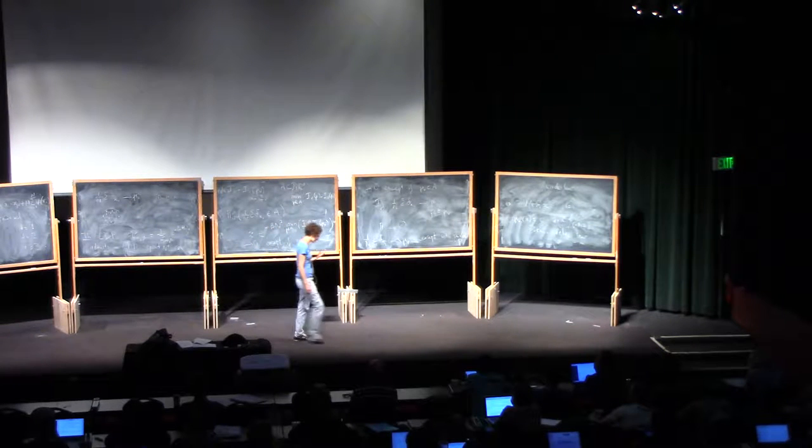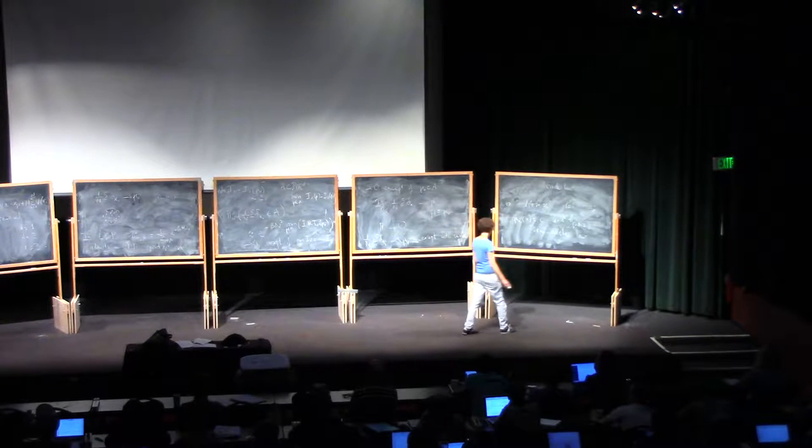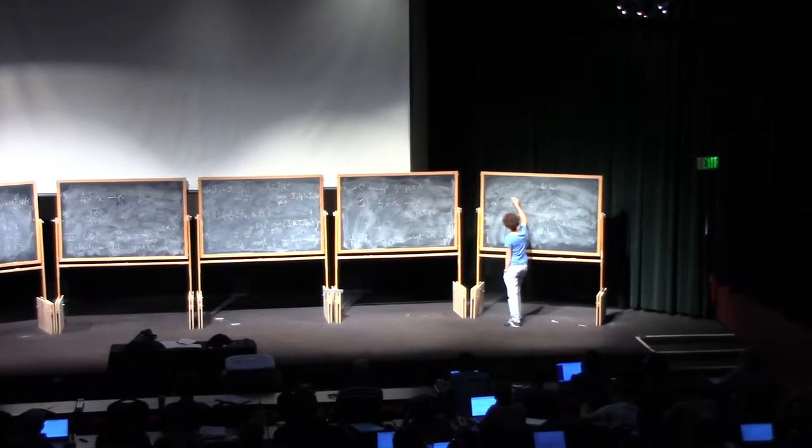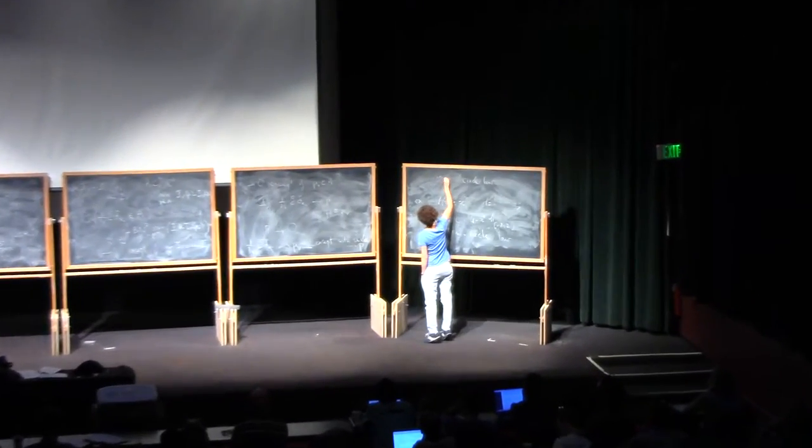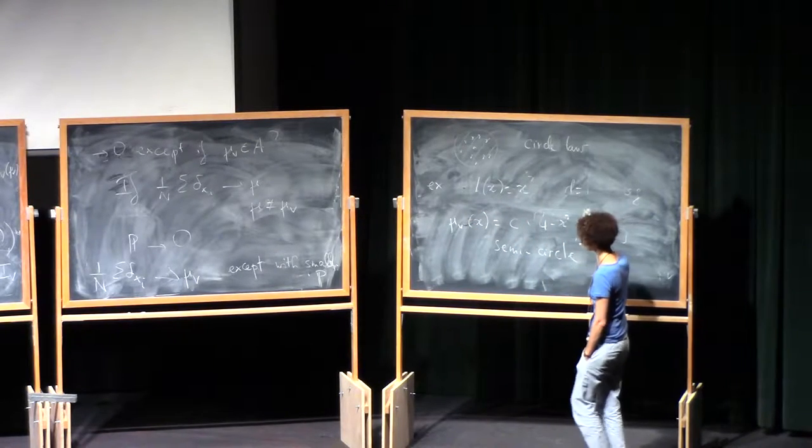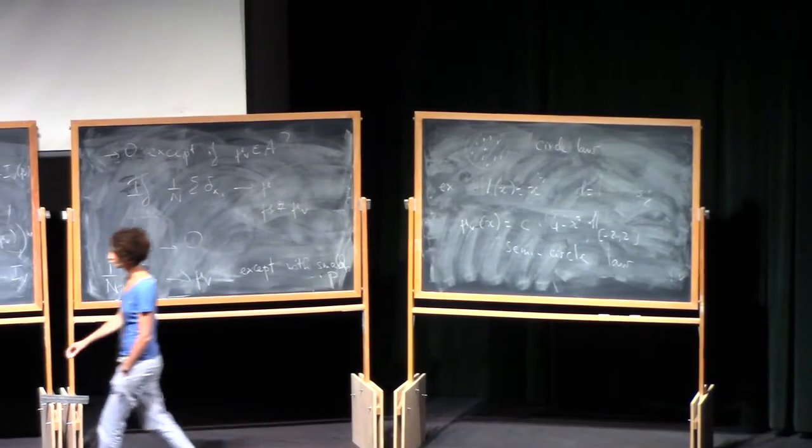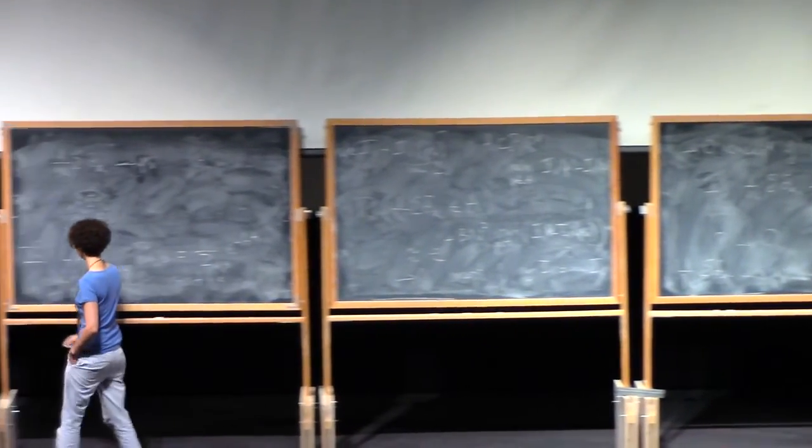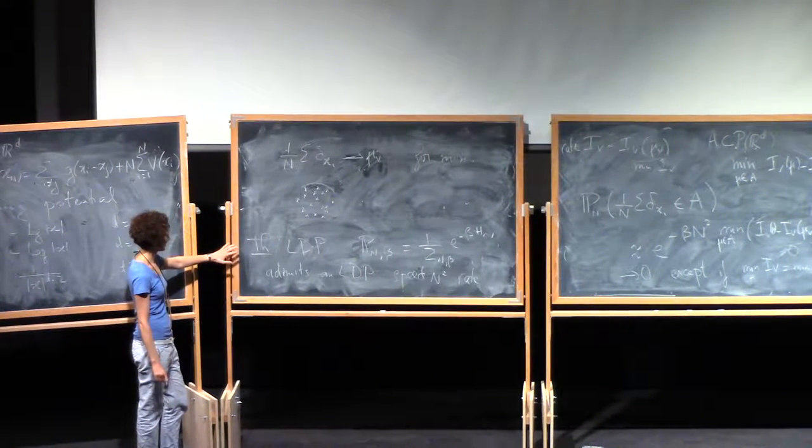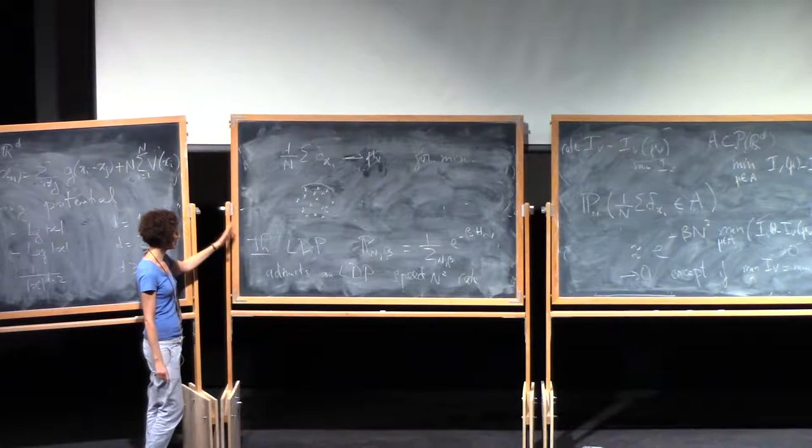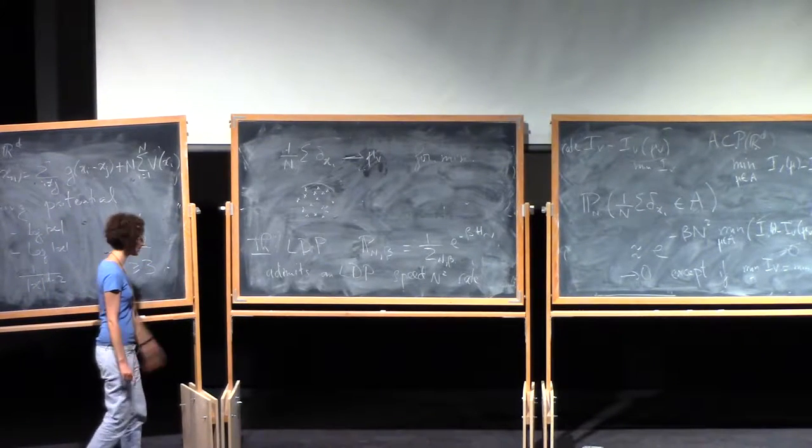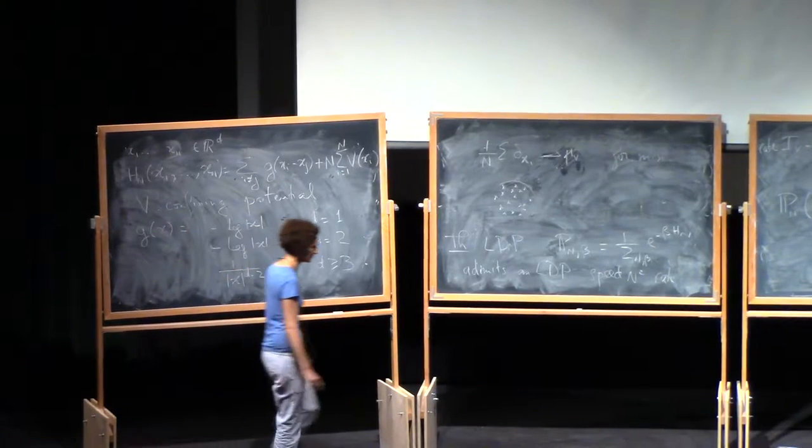Alright, so now we have information for the setting of random matrices, for example, because the points typically will also arrange themselves according to the circle law or the semicircle law. By the way, I should quote names for this theorem. This was proven by Benarus and Guillonet in the 1D situation, Benarus and Zetouni for the real Ginebra ensemble. But you can easily generalize the proof to all these situations.